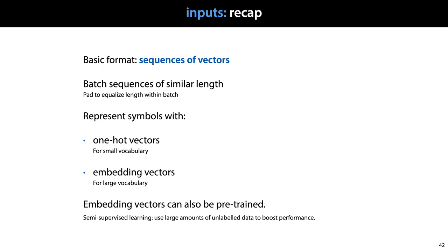And finally, pre-training your embedding methods can be a useful way of performing semi-supervised learning, using a large amount of unlabeled data to boost the performance of your model on labeled data.